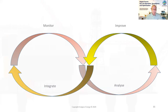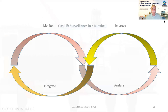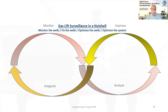Getting to surveillance — I like to look at surveillance not just as a circle, but as an infinity loop with four points: monitor, analyse, improve, integrate, and then back to monitor. Gas lift surveillance in a nutshell: monitor the wells, fix the wells, optimise the wells, optimise the system.